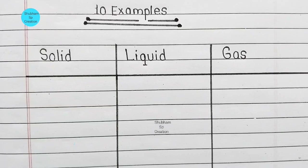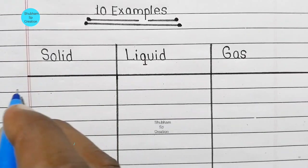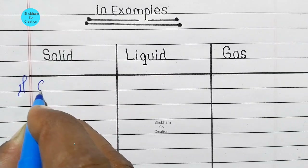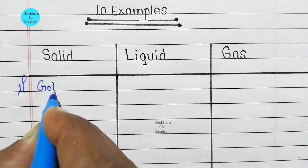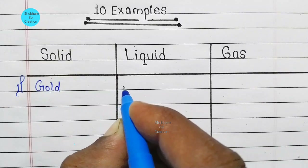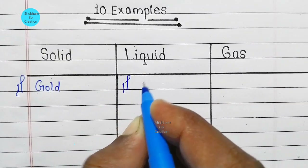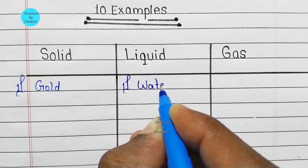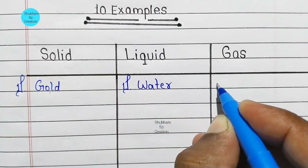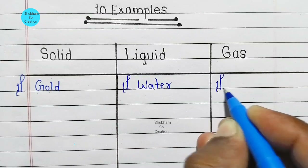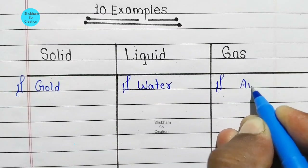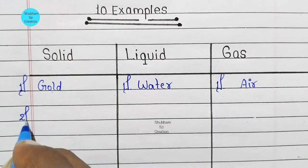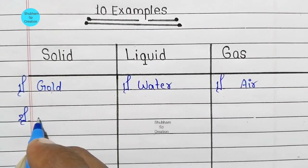First number: solid — gold. First number: liquid — water. First number: gas — air. Second number: solid — wood.